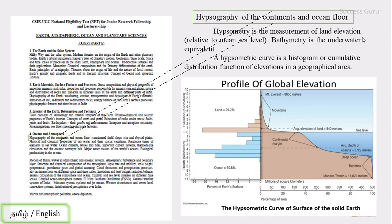This is the overall hypsography of the globe. You can see that approximately 70.8% of the land is covered by the ocean and the average depth of the ocean is 3,729 meters. 29.2% is covered by land surface with an average height of 840 meters. The highest point is Mount Everest at 8,850 meters and the Mariana Trench is the deepest at 11,022 meters.